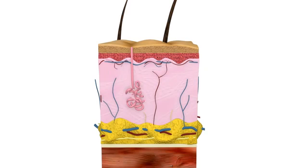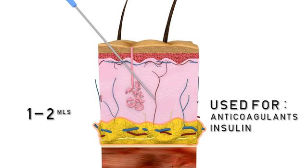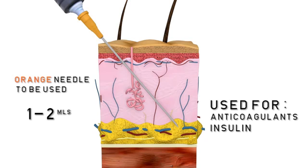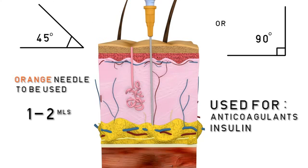The subcutaneous route is usually used when slow absorption medications are needed, for example anticoagulants and insulin. It is only suitable for the administration of one to two mils of medication and should be administered just below the subcutaneous layer. This is found by lifting the skin to raise the adipose tissue from the muscle layer, which will determine the injection angle. The nurse has to calculate whether to use a 45 degree angle or a 90 degree angle to reach the subcutaneous site.